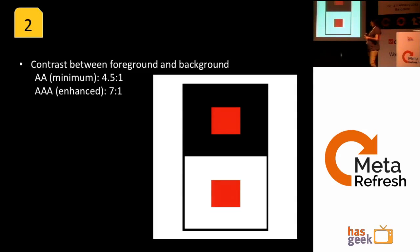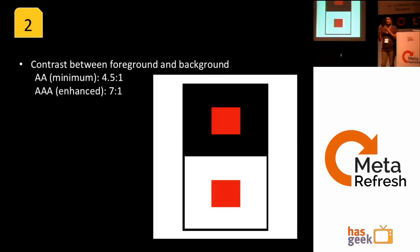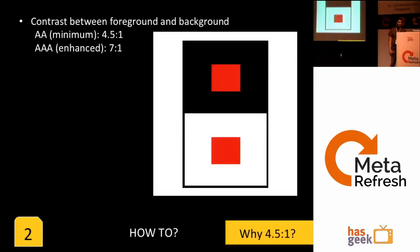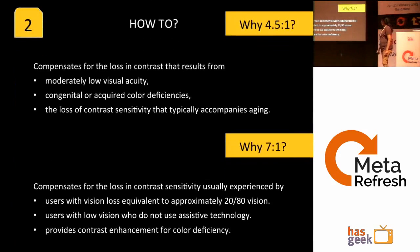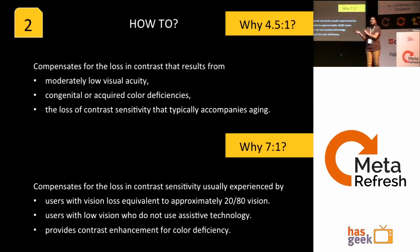Before getting into ratios, contrast is very important — not only for disabled people but for everyone who can see properly. The 4.5:1 ratio compensates for people with low visual acuity and contrast sensitivity. The 7:1 ratio is for people with greater vision loss.